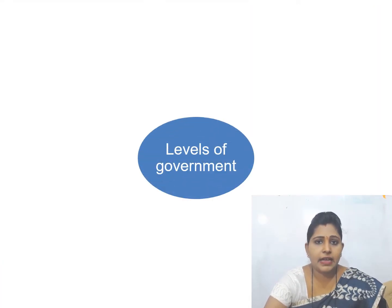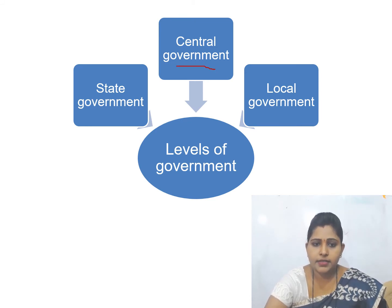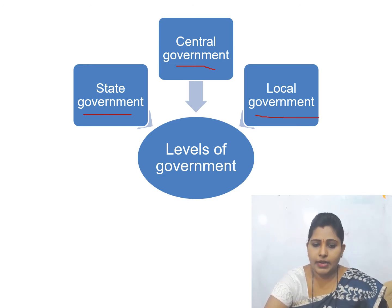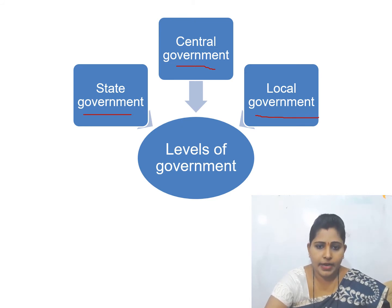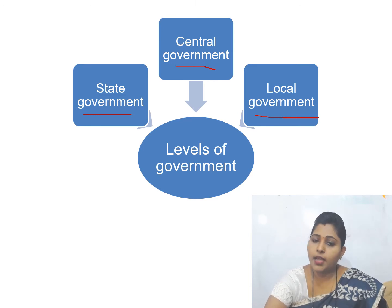Next are the levels of government. There are three levels of government: central government, state government, and local government.